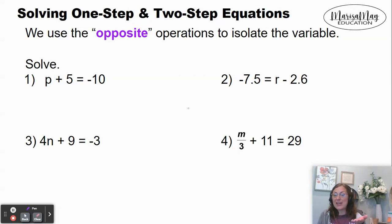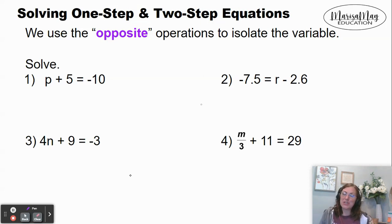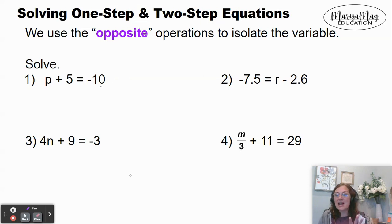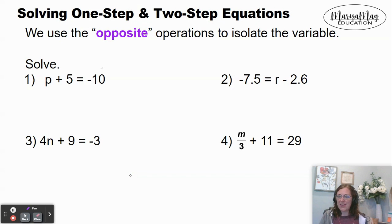So that means when you look at an equation and you see addition, I want you to do the opposite, which would be subtraction. So let's take a look and do just that here in problem number one. I have p plus 5 equals negative 10. Here's what I want you to ask yourself: what is happening to the variable? Well, the variable is being added by 5. So we are going to do the opposite of adding 5, which is to subtract 5.